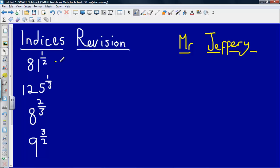So this first one we have 81 to the power of a half. This simply means the same thing as 81 square rooted. So square root of 81 gives us an answer of 9 or negative 9. Remember that the square root of a number can be positive or negative.